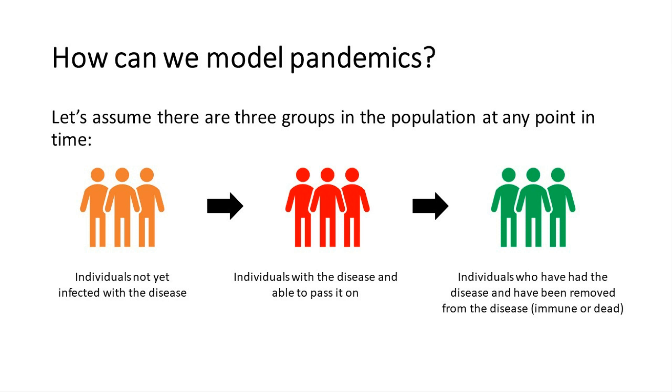The third group is R — removed individuals. These are individuals who have had the disease and are no longer infectious, and they cannot catch the disease again.